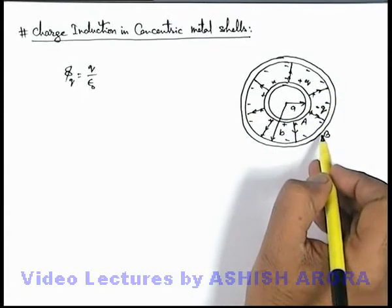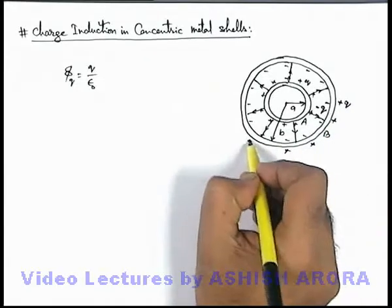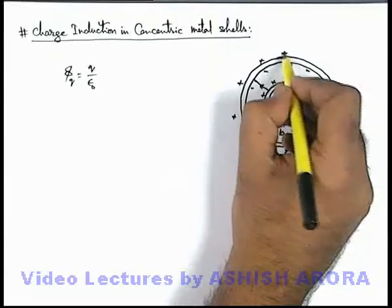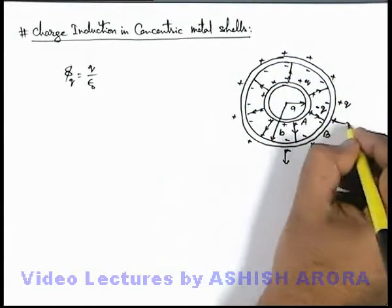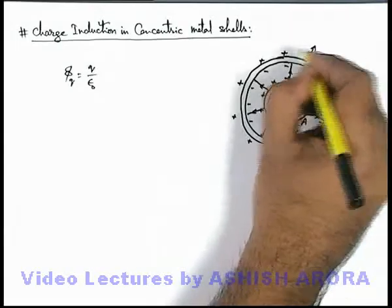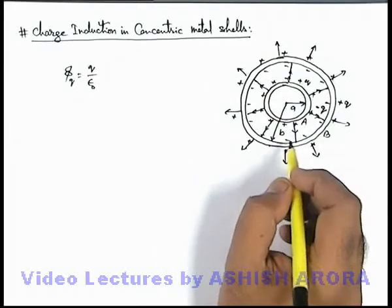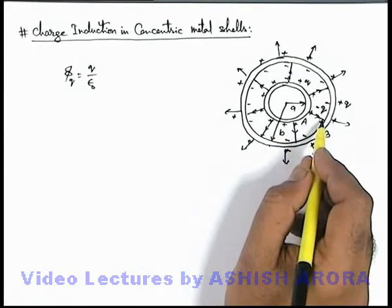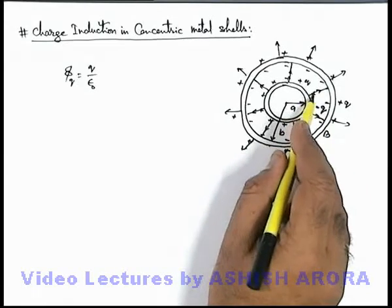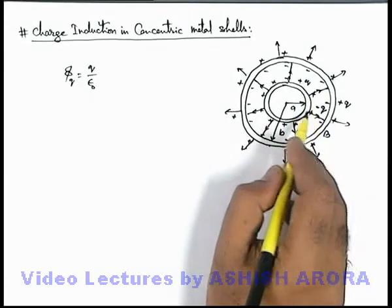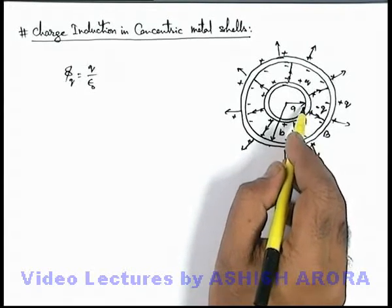Since shell B is neutral, an equal and opposite charge +Q will be induced on the outer surface, because the total charge of shell B should be zero. This will originate further flux Q/ε₀ which will go to infinity. So on the inner surface of metal shell B, exactly an equal charge will be induced, which will absorb the whole flux originated from the outer surface of the inner shell A.